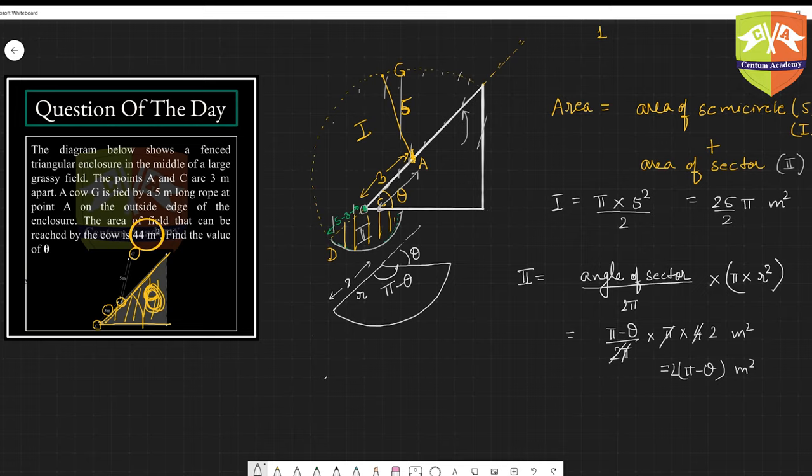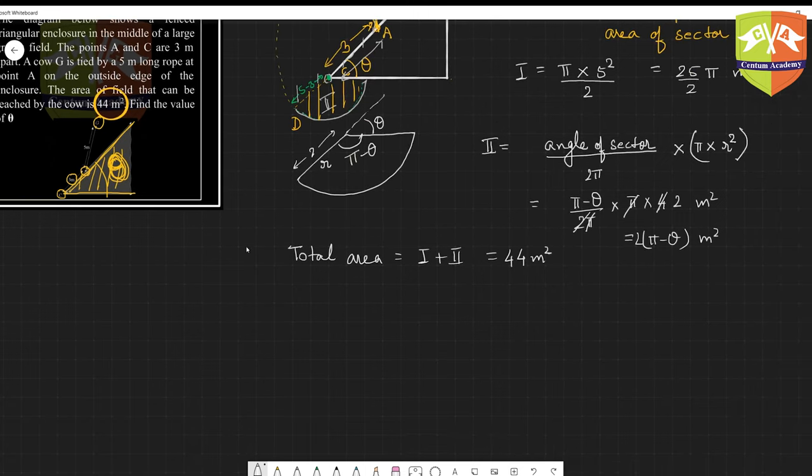Total area is given. Total area is equal to 1 plus 2, is equal to 44 meter square. Now let's deploy the values and find the answer.